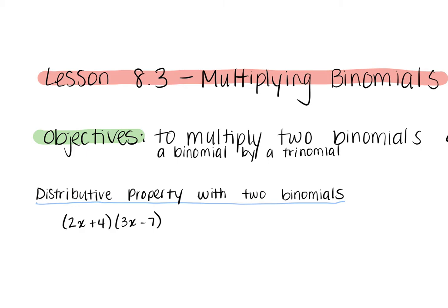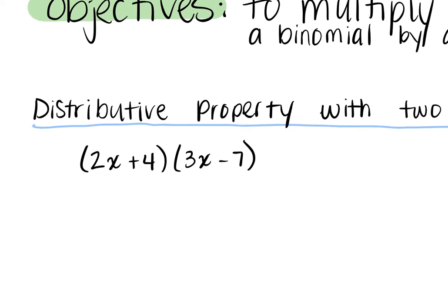In our first example: 2x plus 4 times 3x minus 7. Someone tell me — how does this look different than what we're used to? Ashton? Yeah, normally we see like 3x and then we're multiplying it by like 9x minus 2. Right. In this case we've got two separate binomials and they're being multiplied by each other.